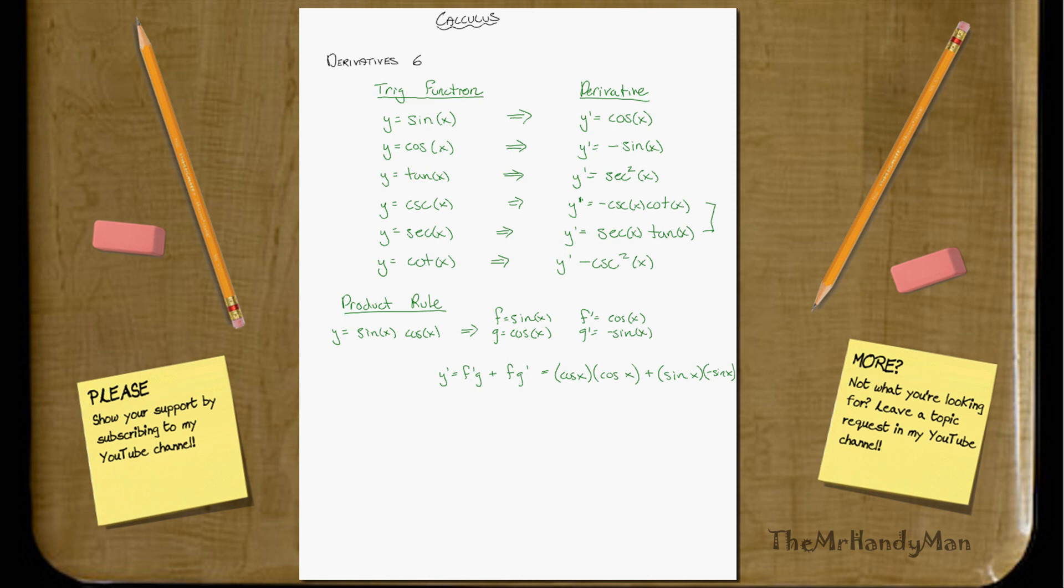And you can kind of tell that this turns out to be cosine squared x minus sine squared x. And you can simplify that out if you wanted to make that a little bit more pretty. But I'll let you do that.